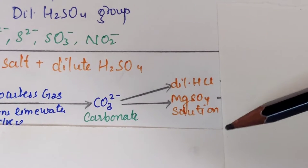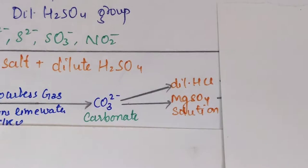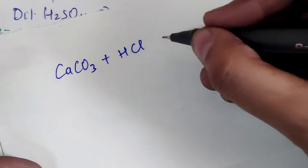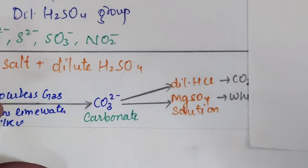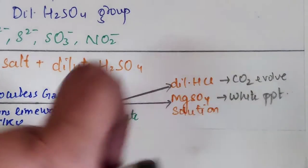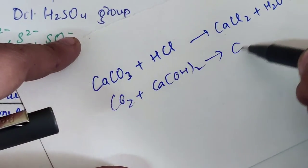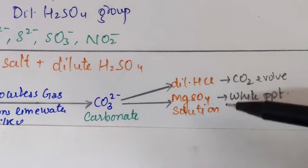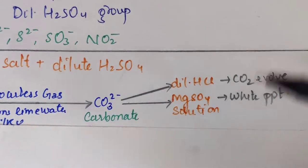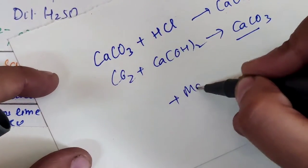Two confirmatory tests for carbonate are the dilute HCl test and the MgSO₄ solution test. In the dilute HCl test, take a salt solution and add dilute HCl — there is evolution of CO₂ gas. For example, calcium carbonate with HCl forms CaCl₂, H₂O, and CO₂. This CO₂ when passed through lime water — Ca(OH)₂ — forms a milky precipitate of calcium carbonate. So brisk effervescence occurs and the gas turns lime water milky.